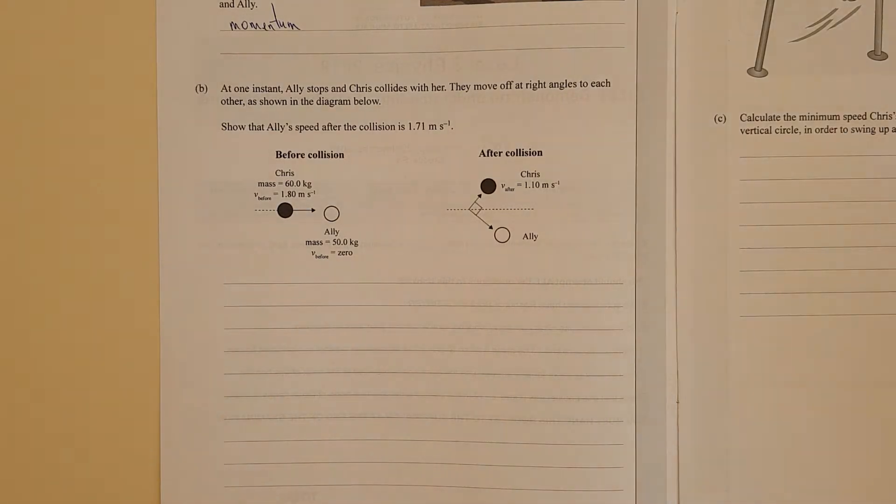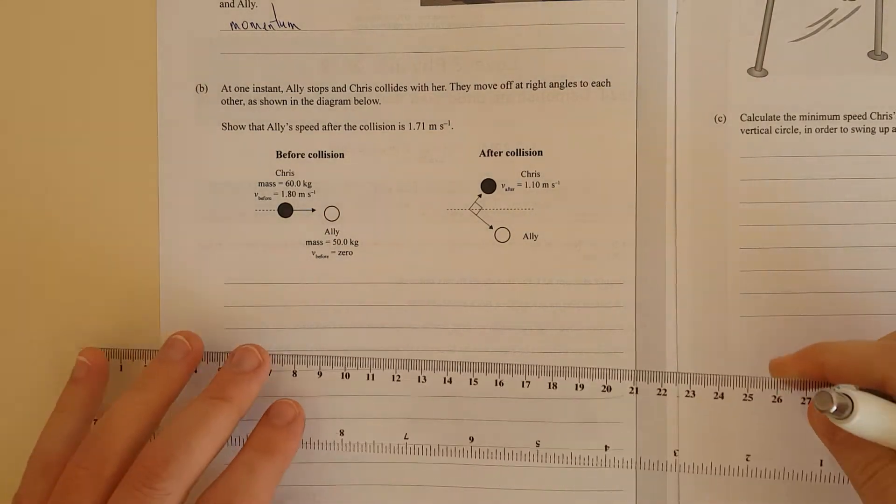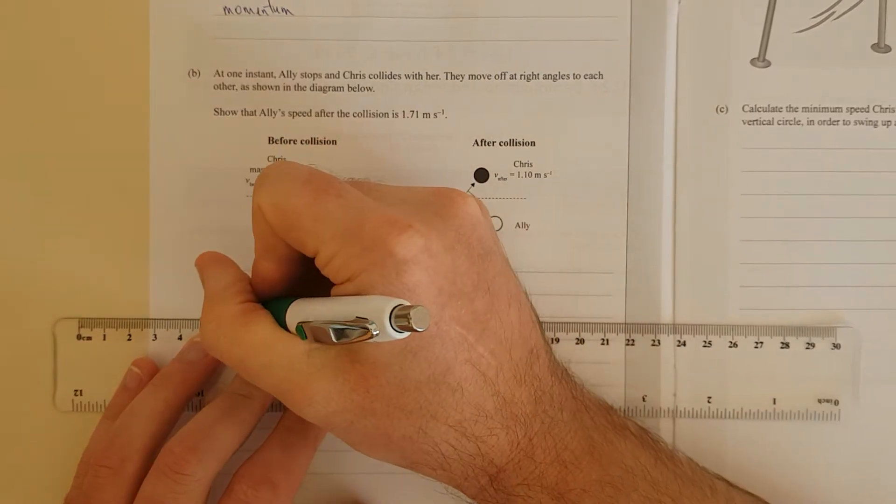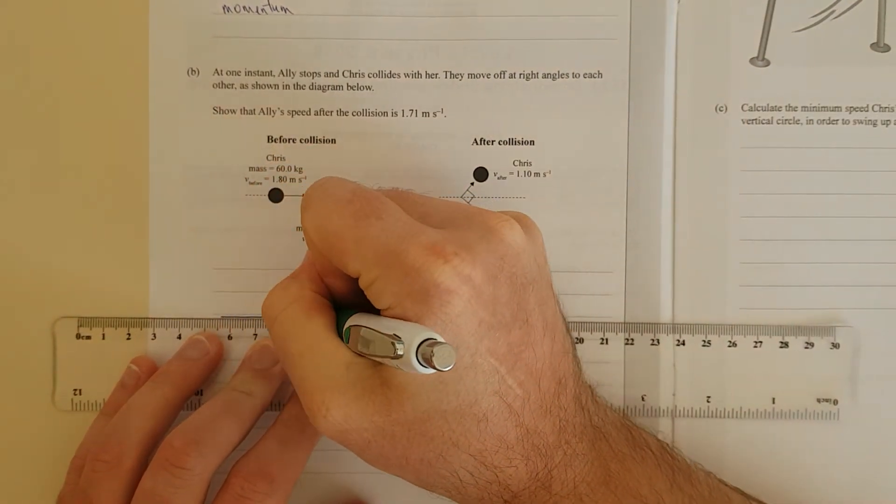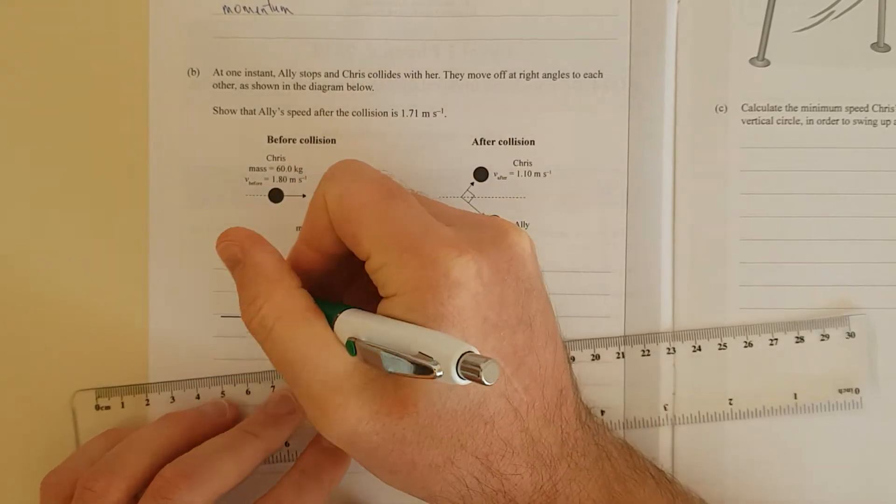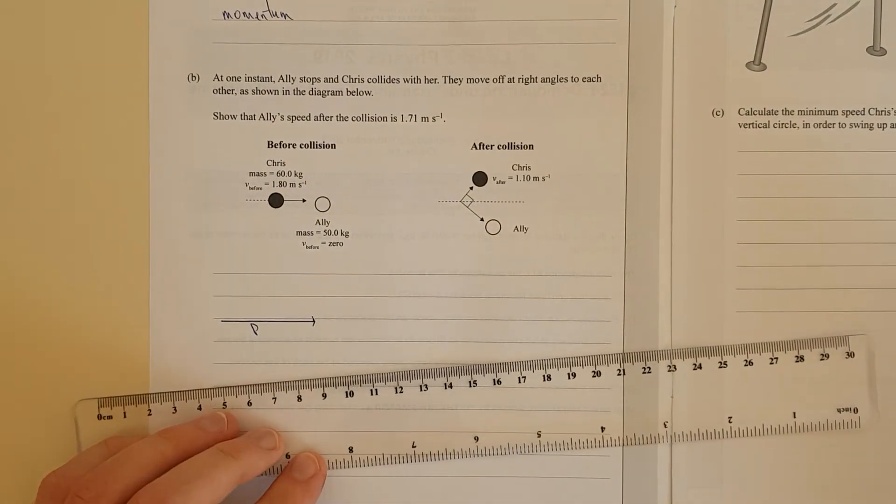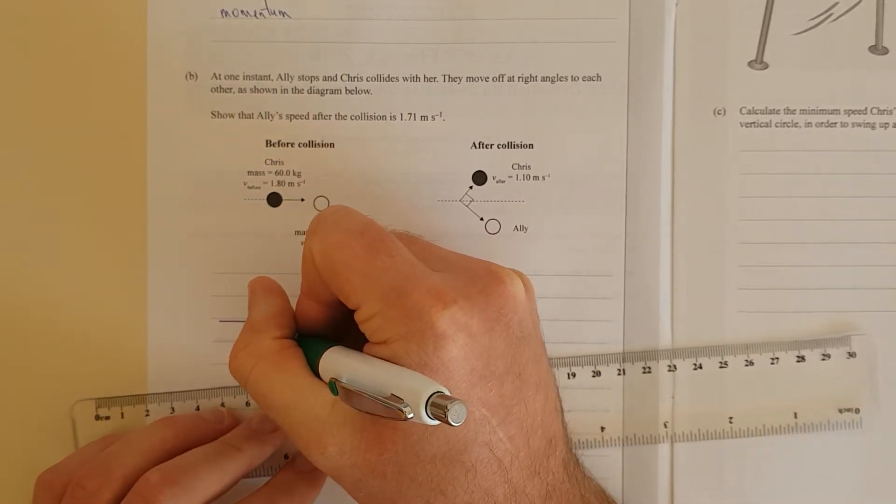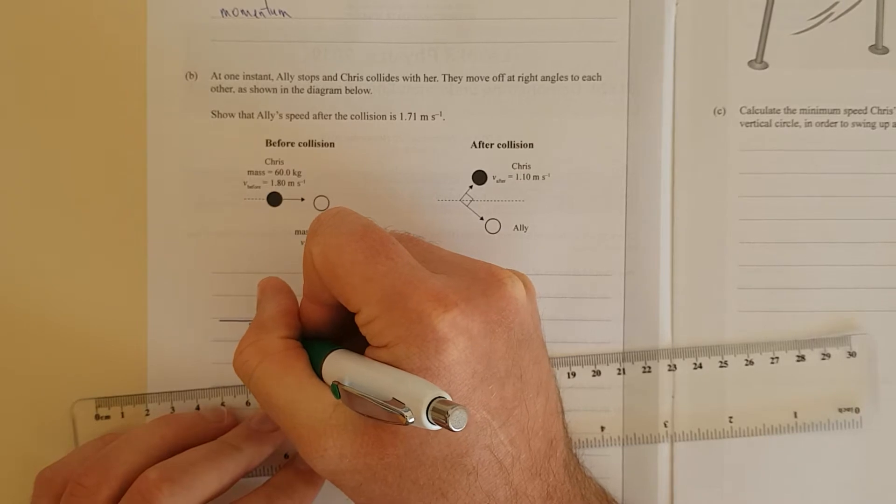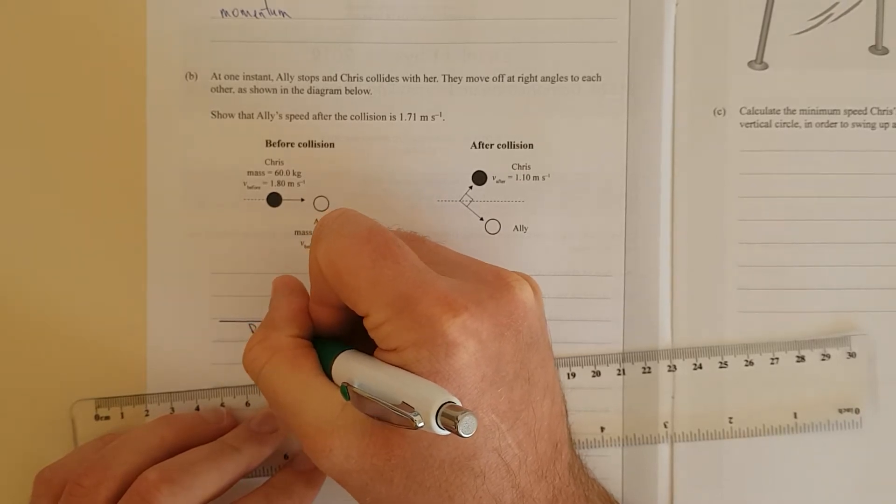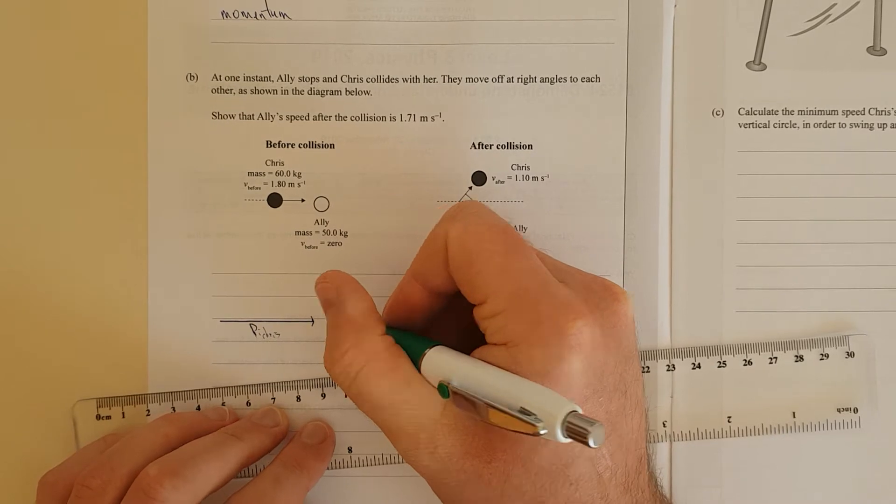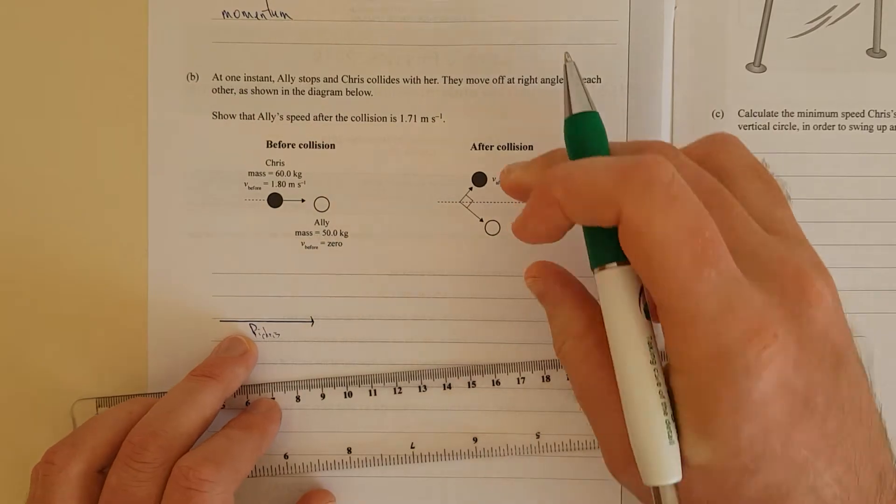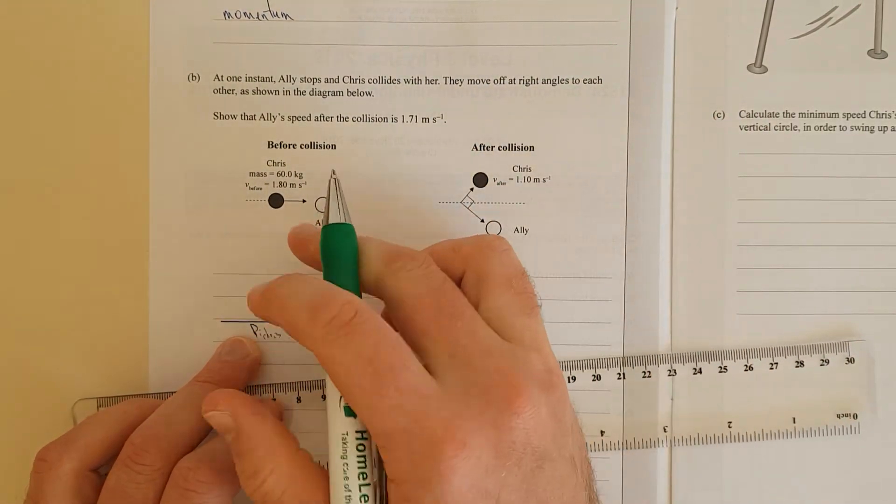The best way to solve this question is with vectors. Vectors is pretty much the easiest way to do it. We have initially—I'll try and sketch it out here, to scale-ish, not exactly to scale—this is the initial p, the initial momentum of Chris.